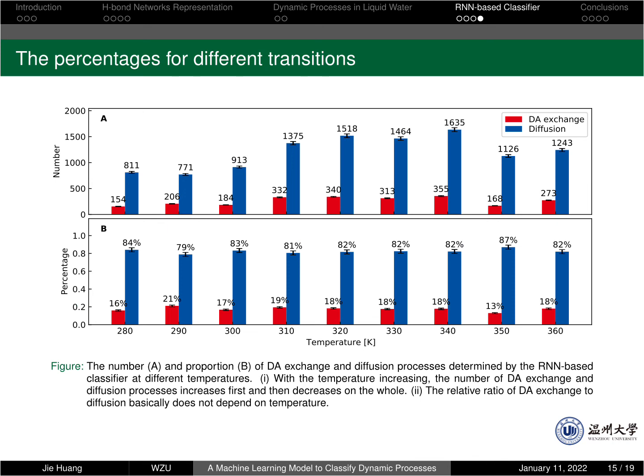As we have a classifier for different dynamic processes in liquid water, we can use this classifier to find out all the DA-exchange and diffusion processes in liquid water for different temperatures. Therefore, we can determine the proportion of DA-exchange. As we can see from the figure, the relative ratio of DA-exchange to diffusion process basically does not depend on the temperature. And this relative ratio is approximately 1 to 4.